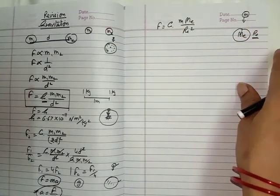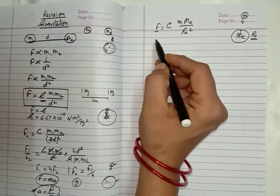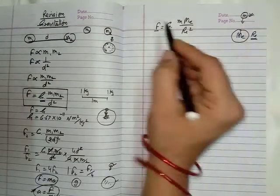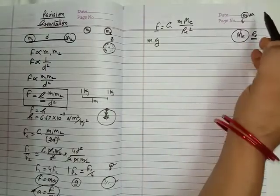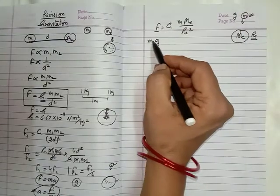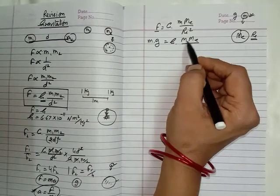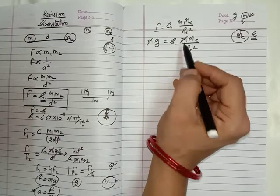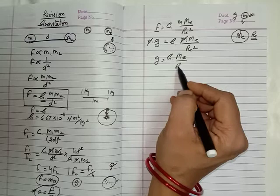The earth has a huge radius, so in comparison to this radius the distance between the object and the earth surface is so less that we can neglect it. So we write the distance between them as Re, the radius of the earth. So F equals G M Me upon Re square. This is the force of attraction acting between the earth and the object. Now we know force equals mass multiplied by acceleration. So for this object, F equals M times g, where g is the acceleration produced by the earth.